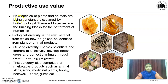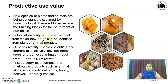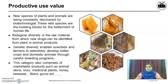The second type of value is Productive Use Value. New species of plants and animals are being constantly discovered by biotechnologists. These wild species are the building blocks for betterment of human life. Biological diversity is the raw material from which new drugs can be identified from plant or animal products. Genetic diversity enables scientists and farmers to selectively develop better crops and domestic animals through careful breeding programs. This category also comprises marketable products such as animal skin, ivory, medicinal plants, honey, bee wax, fiber, gum, etc.